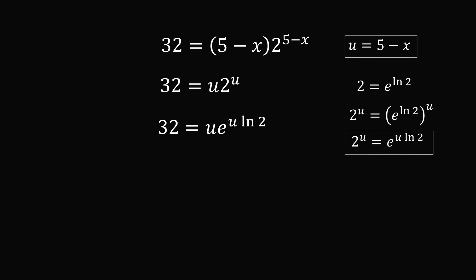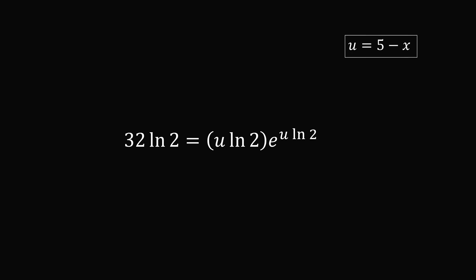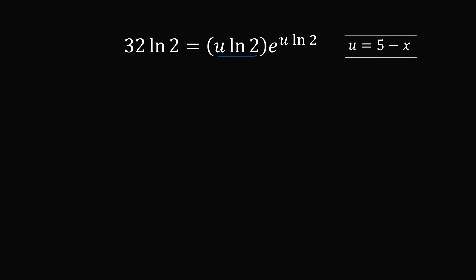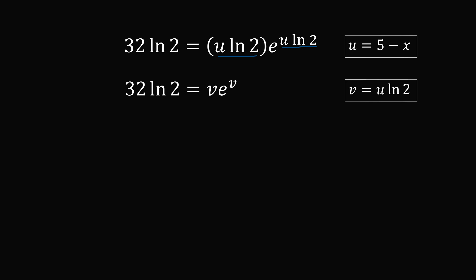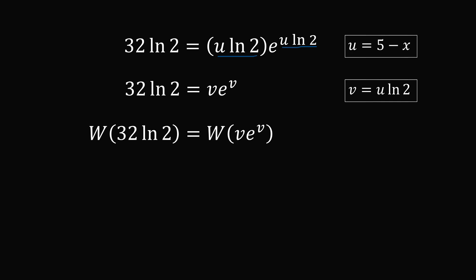We have e to the power of u times the natural log of 2, multiplied by u. If we multiply both sides by the natural log of 2, we have exactly the form we want: 32 times the natural log of 2 equals u times the natural log of 2, multiplied by e to the power of u times the natural log of 2. Substituting v equals u times the natural log of 2, the equation becomes 32 times the natural log of 2 equals v times e to the power of v. We can now apply the Lambert W function to both sides, and it simplifies to v equals W of 32 times the natural log of 2.